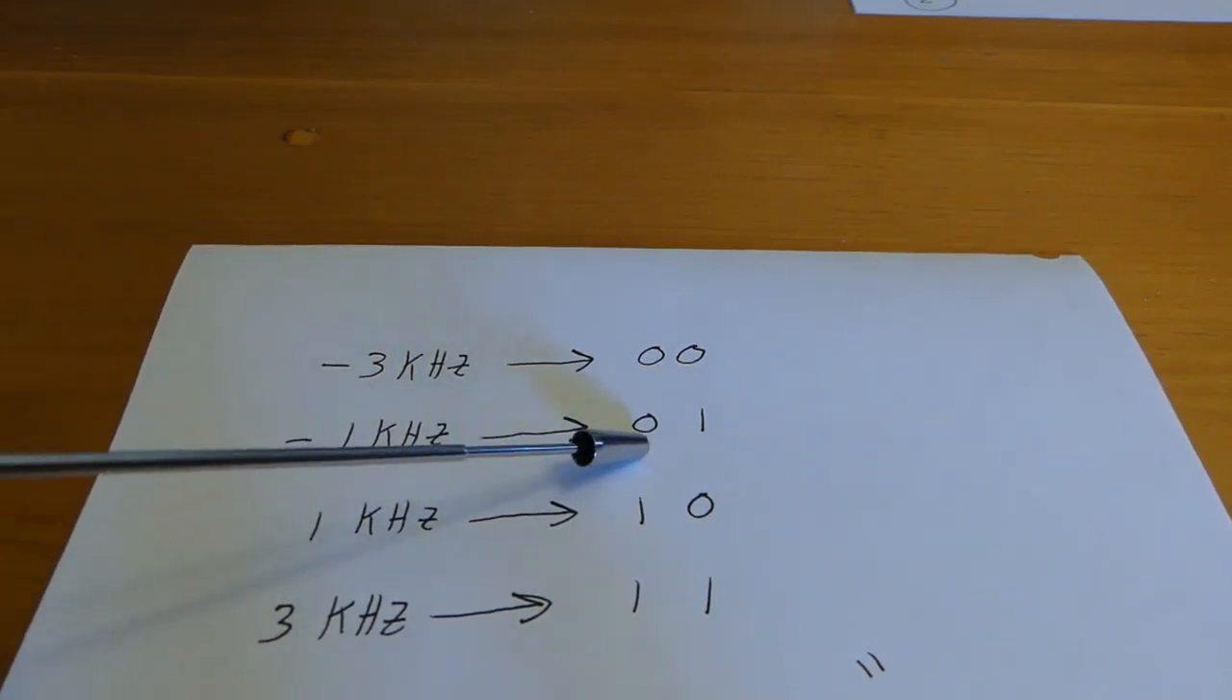If we're negative 3 kilohertz down, that means 0,0 was transmitted. If we're 1 kilohertz below the carrier, that means 0,1 was transmitted. If we're positive kilohertz above the carrier, that means 1,0. And if we're 3 kilohertz above the carrier, that means we're transmitting 1,1. So this is how we take digital data and represent it in an actual analog form.